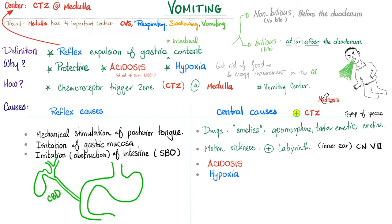Anything that stimulates the chemotactic trigger zone will cause vomiting. This includes medications known as emetics — medications that cause vomiting — and they include apomorphine, ipecacuanha/emetine, and syrup of ipecac. Syrup of ipecac was a drug used historically by physicians to induce vomiting and get rid of toxins from the patient's body. But later, doctors discovered that the toxin probably damaged the mucosa going in, so it's not the best idea to also damage the mucosa again going out. Plus, it had more side effects, so it fell out of favor.